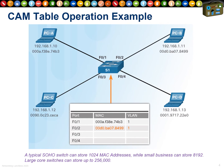Here we have four PCs plugged into a simple switch. This switch has a memory table called the Content Addressable Memory — simply a list that says this interface has this MAC address on this VLAN. Every time these four PCs talk, the switch learns based on the source MAC address where they are. PCA is on port 1, PCB is on port 2, and it learns their MAC addresses.